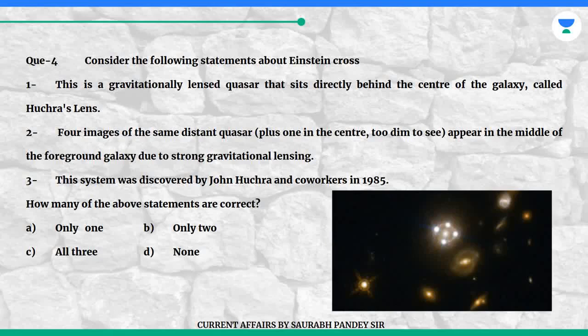Question 4: Consider the following statements about Einstein Cross. Statement 1: This is a gravitationally lensed quasar that sits directly behind the center of the galaxy called Huchra's lens. Statement 2: Four images of the same distant quasar, plus one in the center too dim to see, appear in the middle of the foreground galaxy due to strong gravitational lensing. Statement 3: This system was discovered by John Huchra and colleagues in 1985.